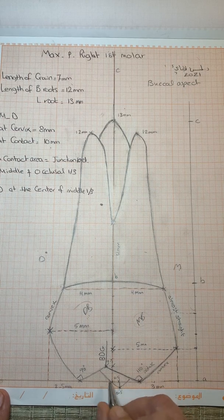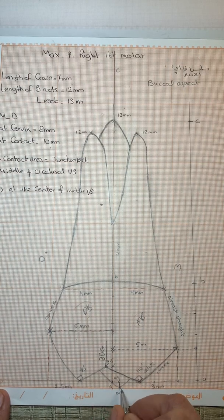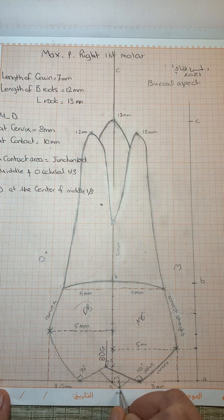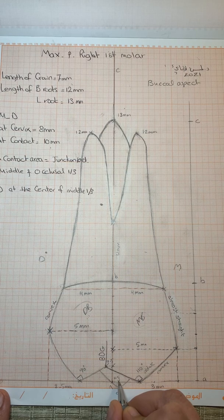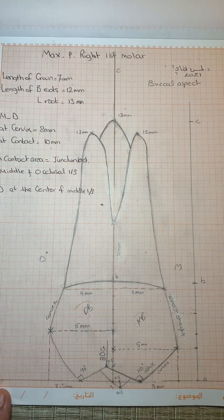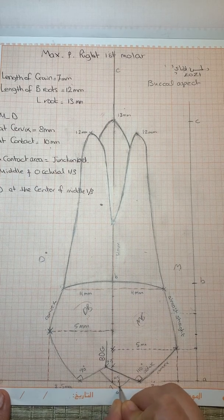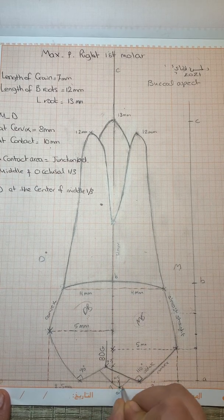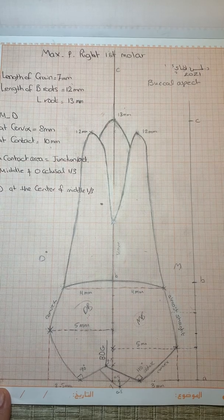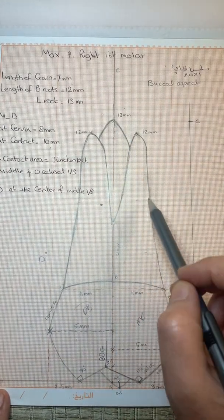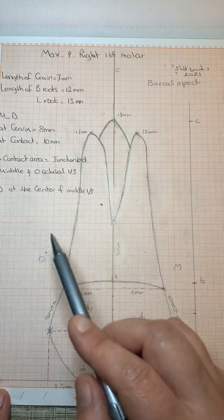From this aspect, for the lingual cusps: to define the location of the lingual cusp, move 0.5 millimeters toward the mesial and then 0.5 millimeters downward. The cusp has two slopes — the slopes of the major mesiolingual cusp. The roots: as mentioned, three roots are visible from this aspect.